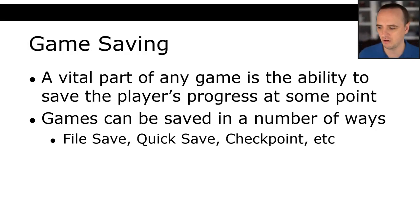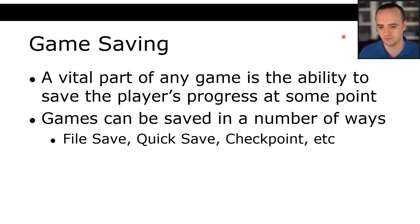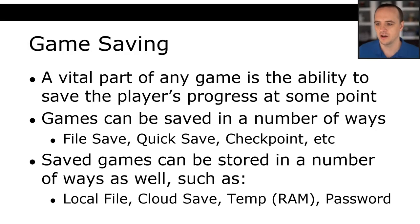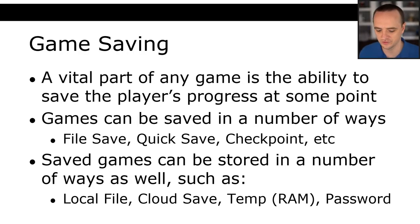Games can be saved in a number of ways, and I'm sure you've all played games that had all of these methods implemented. You can have a file save — write some data to a file and load from it. You can have a quick save, which saves to memory. Or a checkpoint save, some place in the level that when you return, you're at that checkpoint. Save games can also be stored as a local file, cloud save, temporary RAM save, or a password save — which was popular before files could be stored on cartridges.